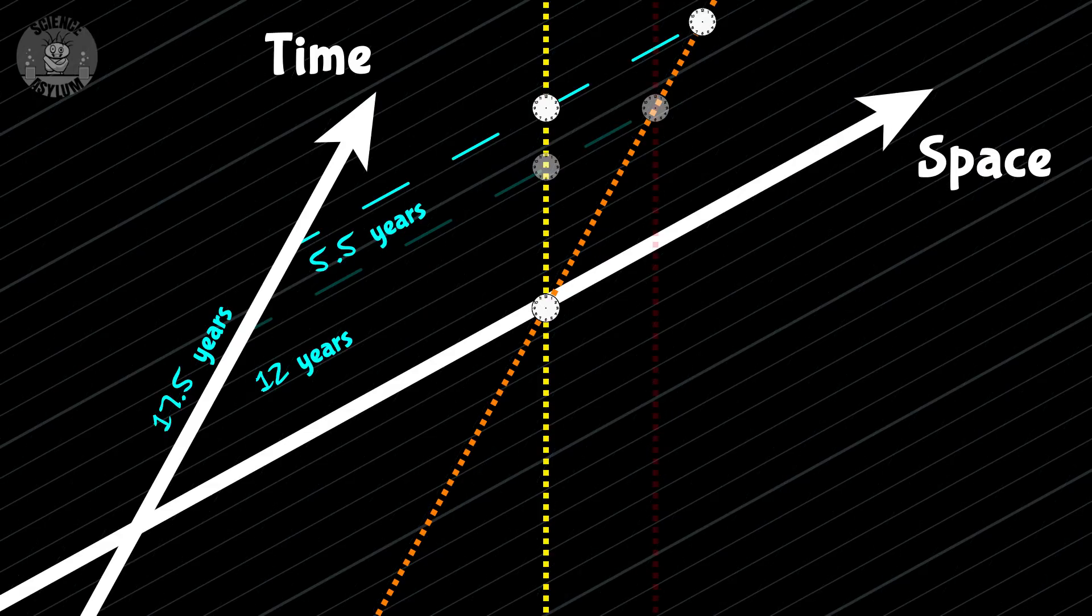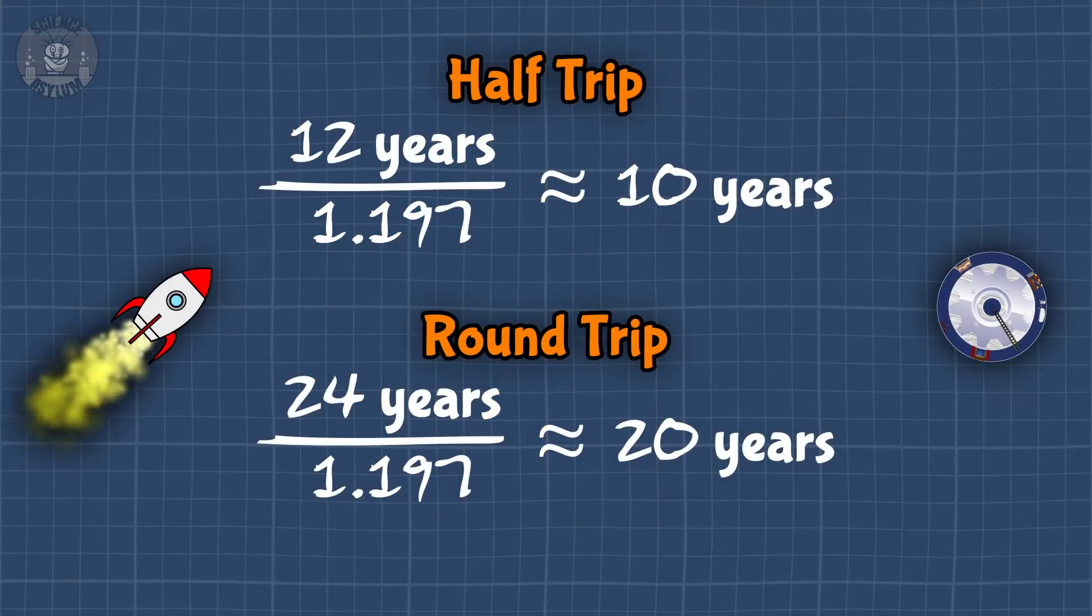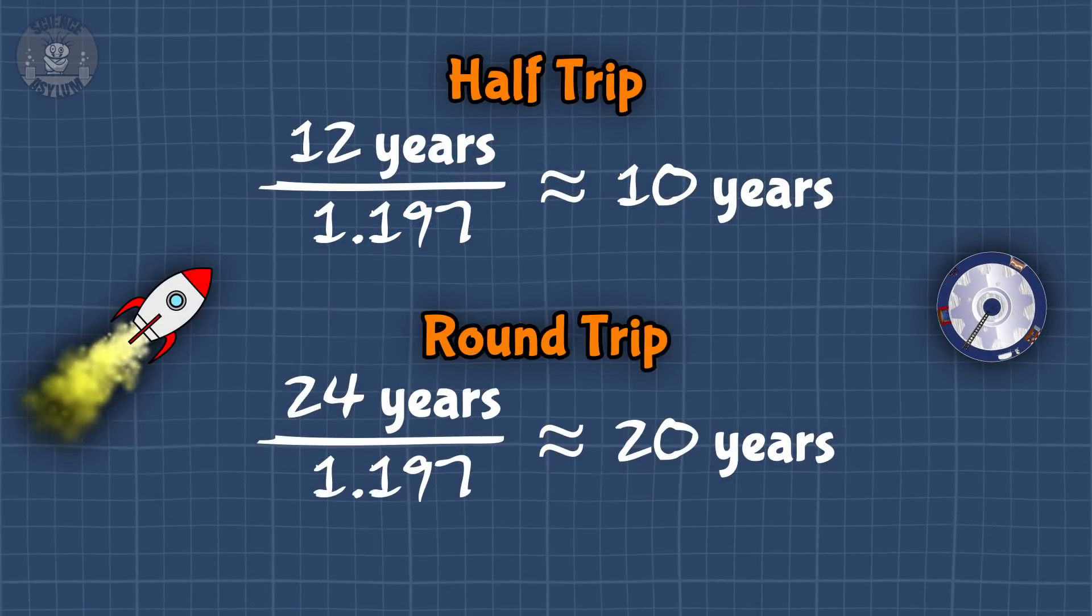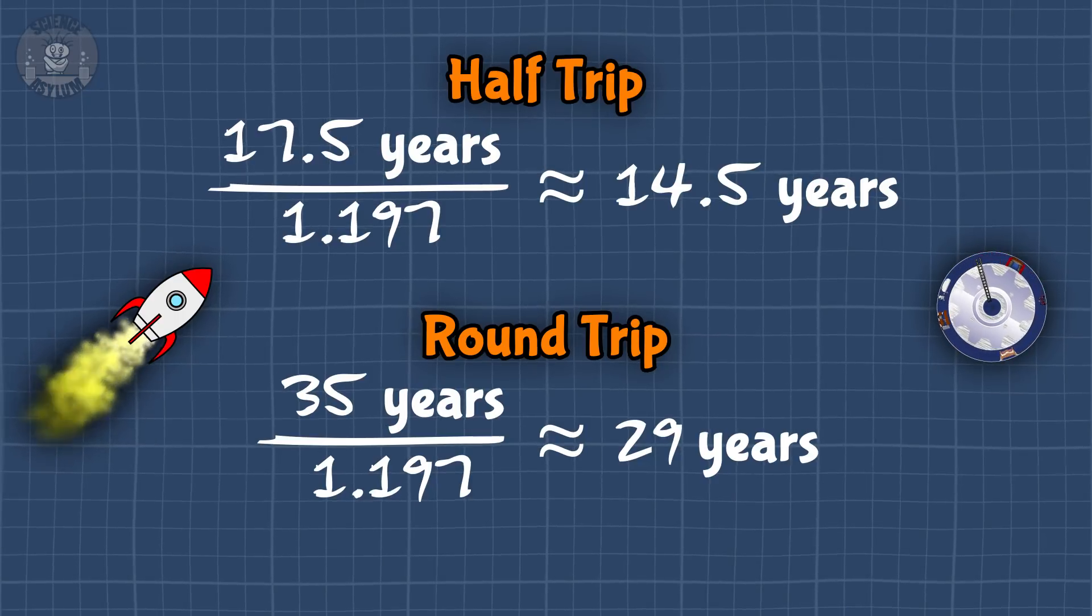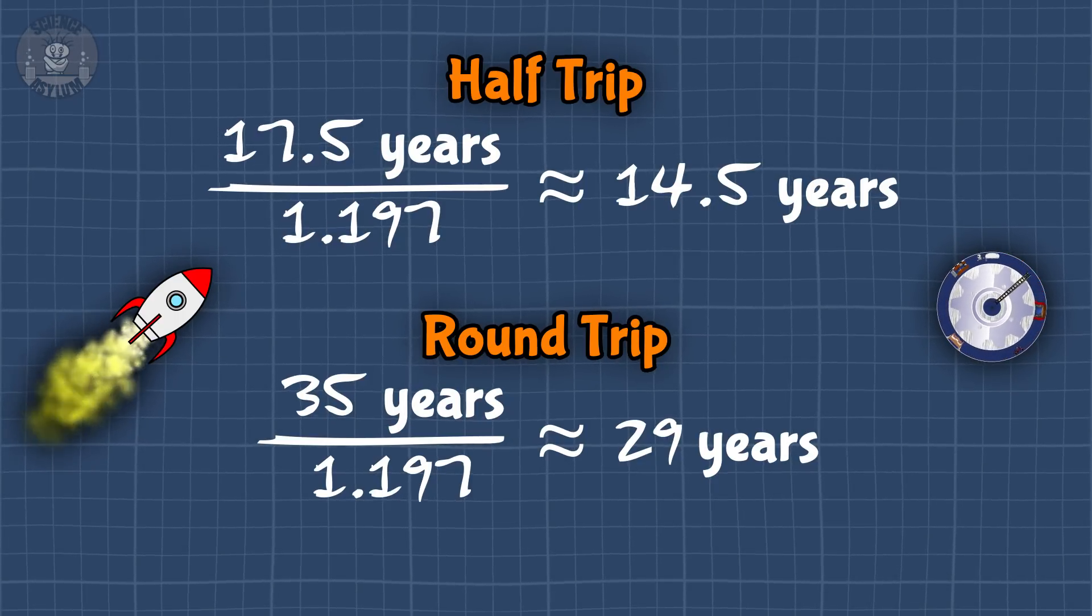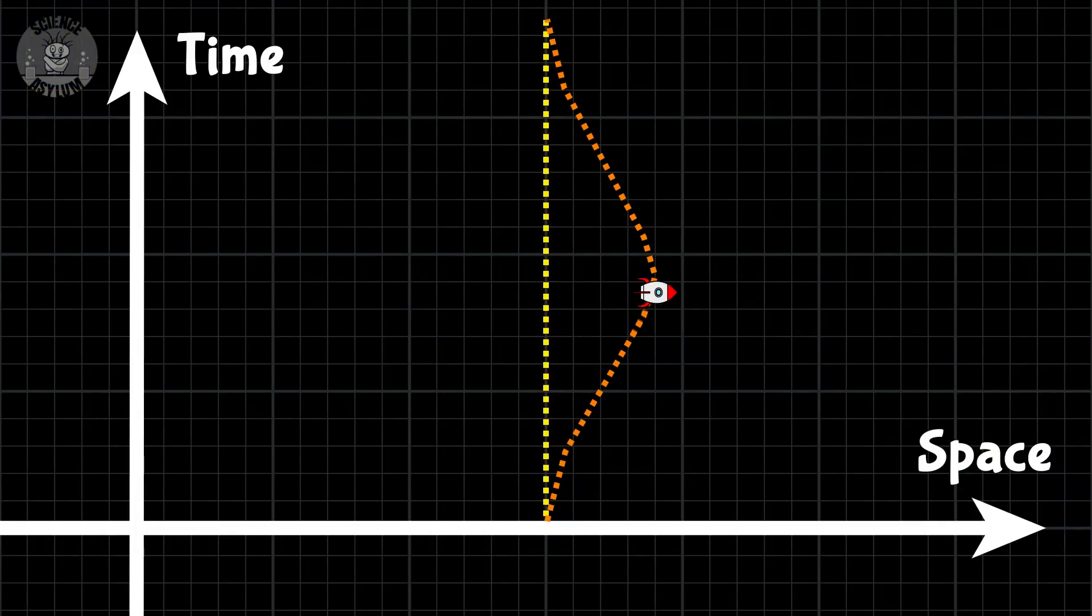These horizontal grid lines are lines of equal time. That 17 and a half years is the number Rocket Clone should have used to calculate my time using that sloppy calculation from earlier. Except he wouldn't have known to do that. That extra 5 years doesn't even exist in the full twins paradox, because by then Rocket Clone would have turned around. He wouldn't even be on that path anymore.